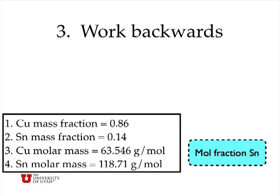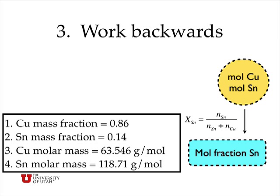So now I'm going to work backwards from the answer that I want to obtain. The answer I want is the mole fraction of tin, and the way that I calculate mole fractions is to take the number of moles of tin and divide by the sum of the number of moles of tin and the number of moles of copper. So in working backwards, I'm going to at some point have to get the number of moles of copper and the number of moles of tin.